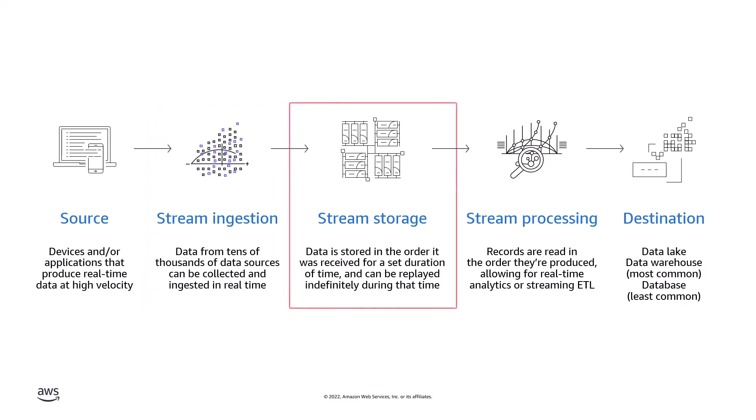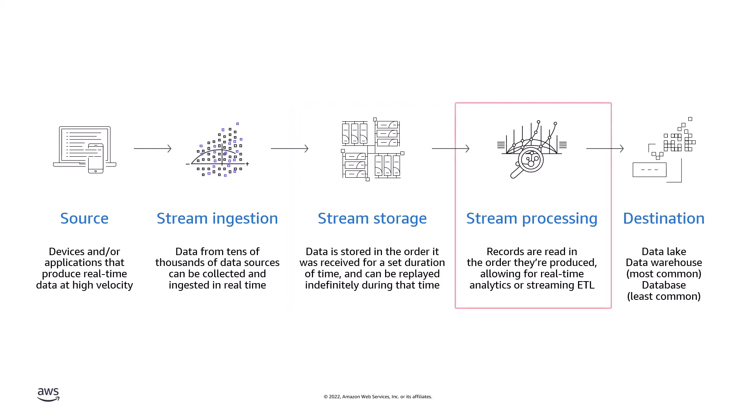The third stage is stream storage. Data is stored in the order received for a set duration, and can be replayed indefinitely during that time. The fourth stage, stream processing, is when the stored data is analyzed to gain insights. Records are always read in the order in which they are received, which makes stream processing different from other types of processing.